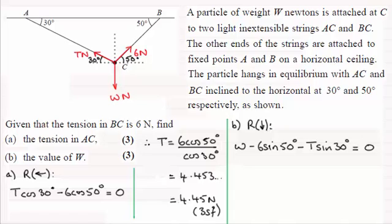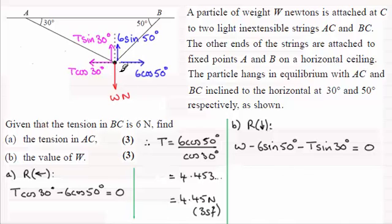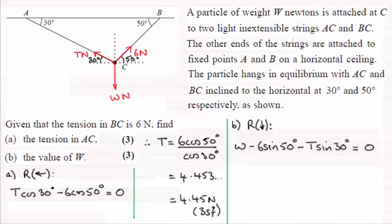So just as a reminder again, I'll take away those tensions and put on the components. So hopefully you can see that W minus the 6 sine 50 minus the T sine 30 are the only forces acting on C in the vertical sense. So that force there, resultant force, must equal zero. So now I'm working slowly through this, but it is just to demonstrate the method. Okay, let's put those tensions back on. There's our equation.